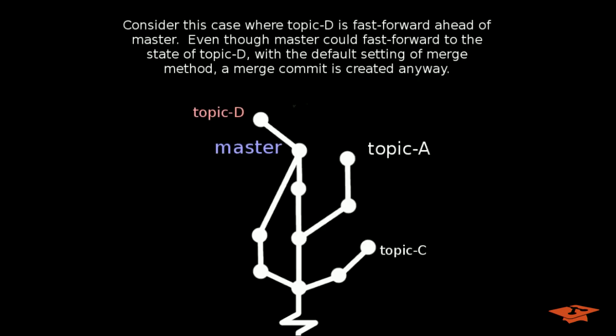Consider this case where topic D here is fast forward ahead of master. Even though master could fast forward to the state of topic D, with the default setting of the merge method, a merge commit will be created anyway. So that looks like this. Master was here, it moves to here.